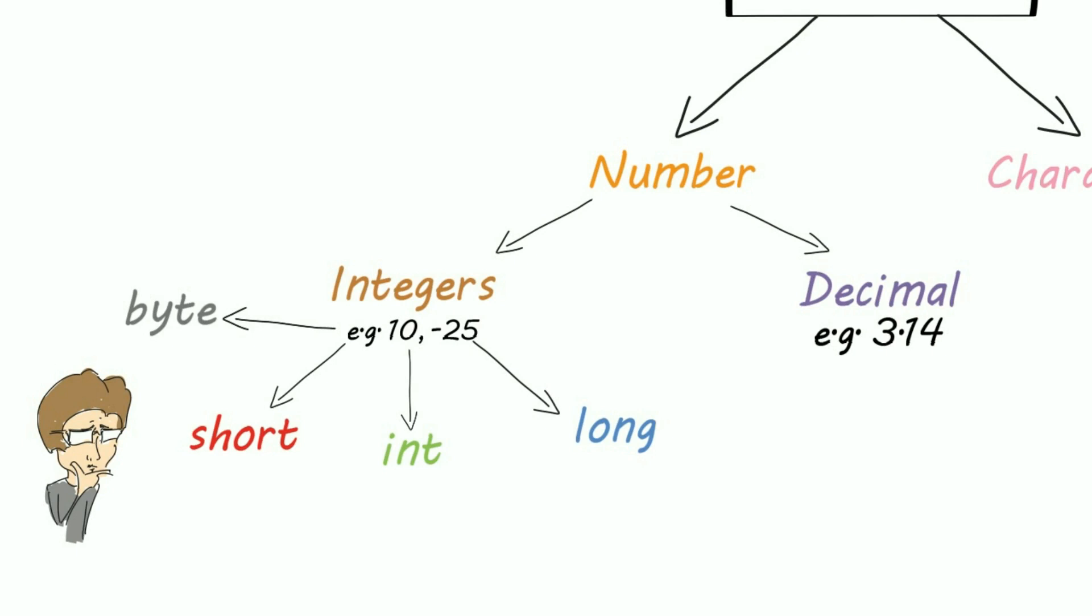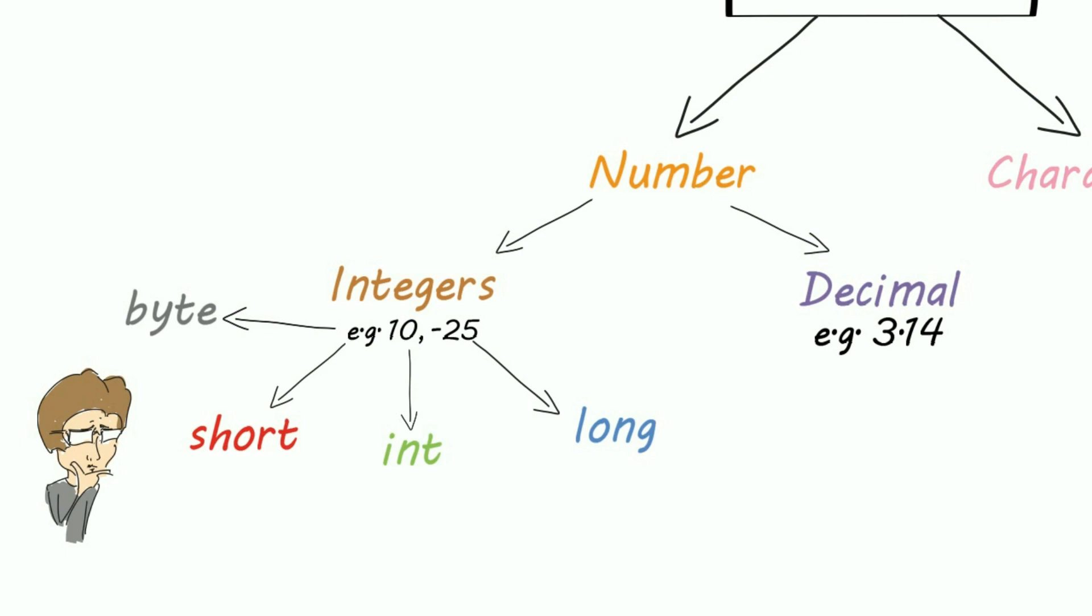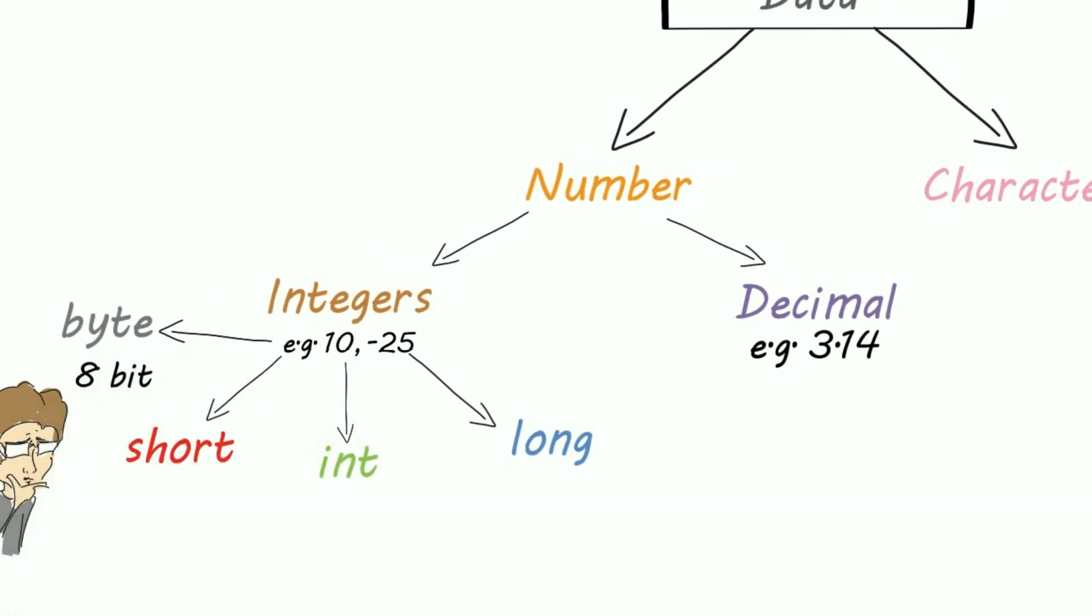These variables consume memory. For better memory utilization, we have four different sizes. Byte is 8 bit, short is 16 bit, int is 32 bit, and long is 64 bit.